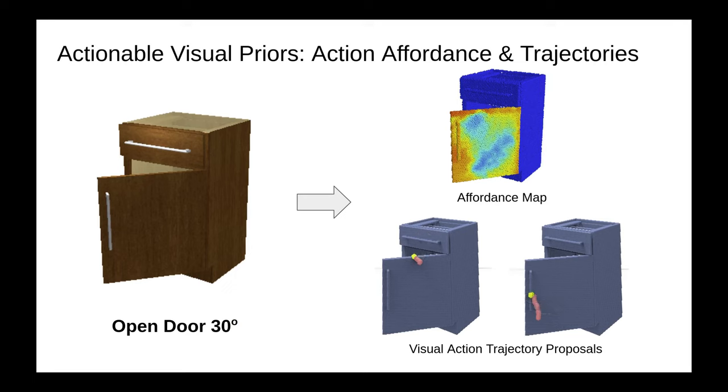Such visual predictions provide informative guidance for downstream robotic planning and control. Compared to a rule-based policy, our proposed system automatically proposes different interaction strategies.